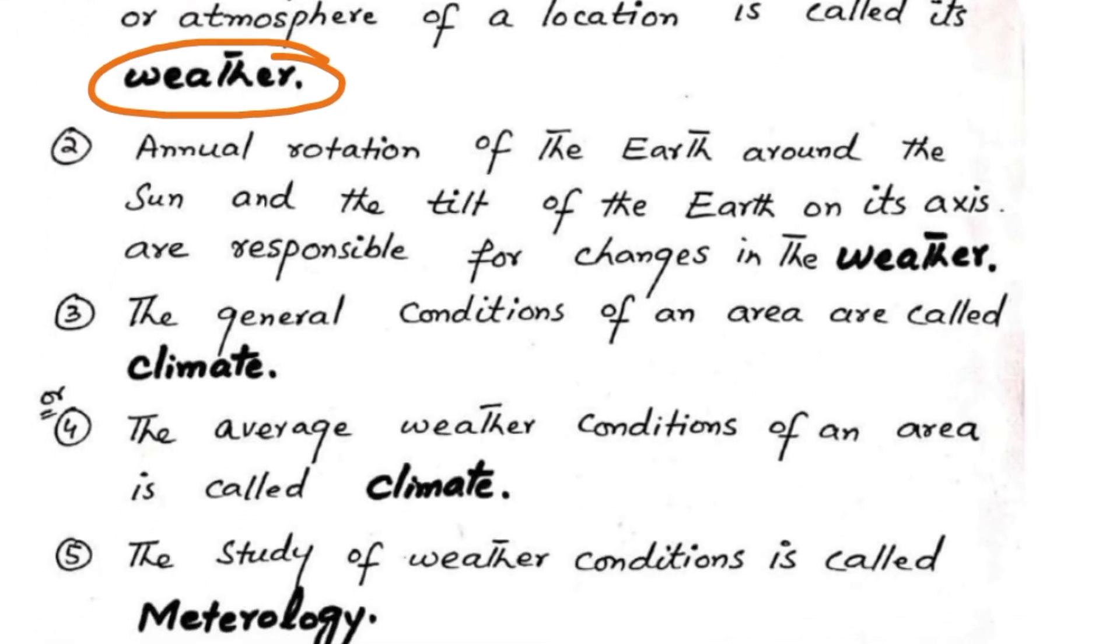The annual rotation of the Earth around the Sun and the tilt of the Earth on its axis are responsible for changes in the weather.